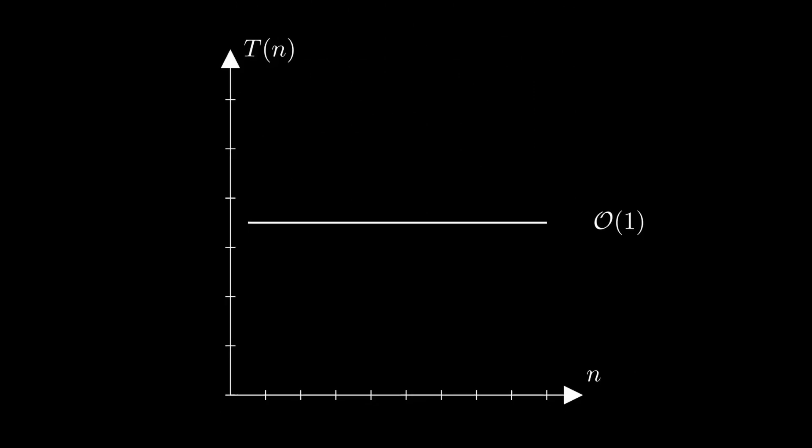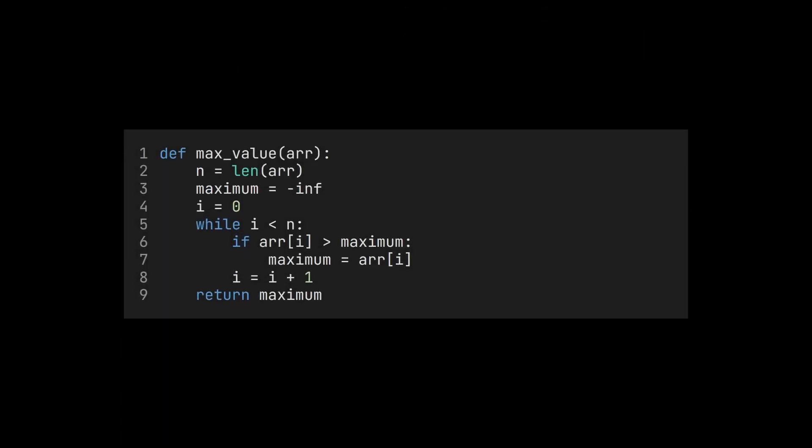Algorithms which can handle arbitrarily large inputs usually do not have constant running time, but instead require more time for longer inputs. Algorithms with constant space requirements, on the other hand, are not uncommon. For example, the algorithm from last video that finds the largest element in an array only uses constant memory. This is because apart from the input array — which, remember, does not count — it uses only three simple variables: n, maximum, and i. All three of these only require constant space, so the algorithm has constant space complexity.